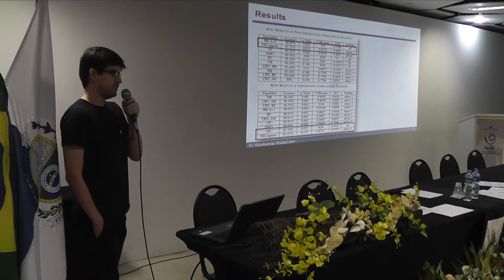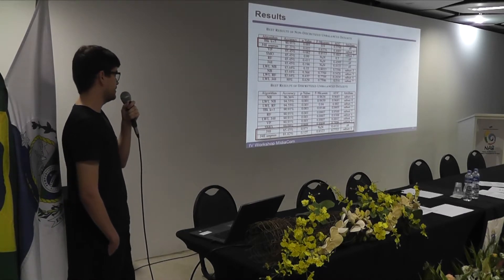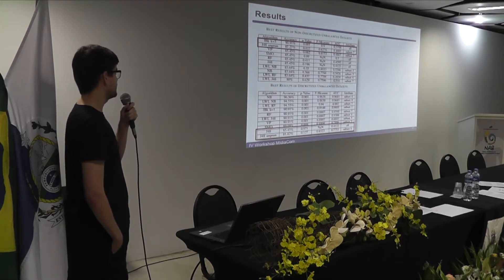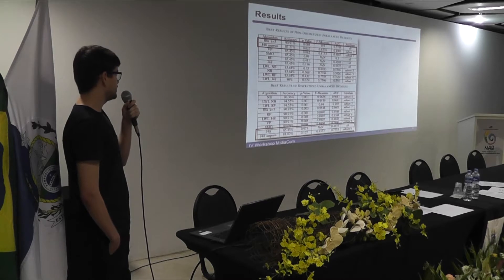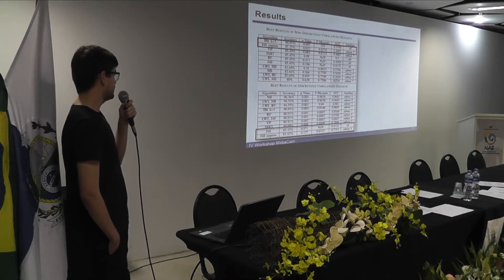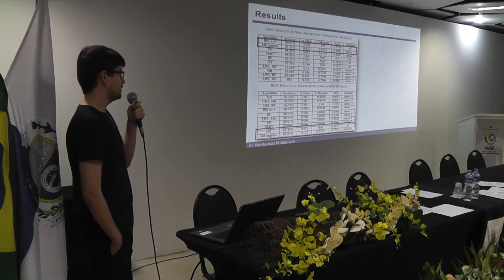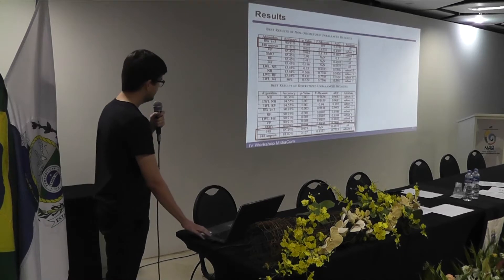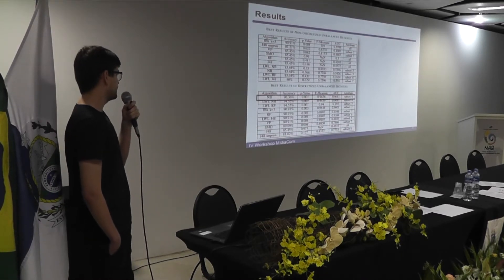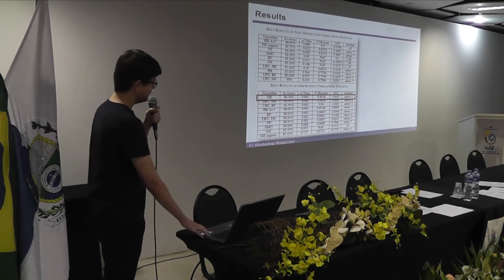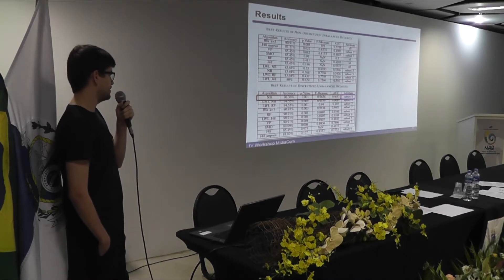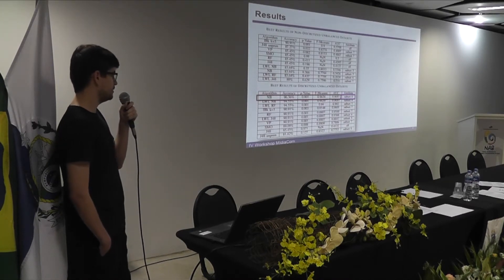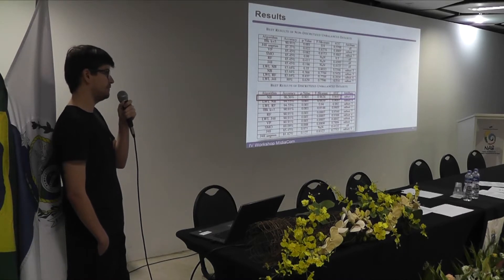These are the results before and after supervised discretization. The table at the top shows results before supervised discretization — only two of them got an accuracy higher than the baseline. On the other hand, after supervised discretization, only two of them got an accuracy lower than or equal to the baseline. Our best result was 96.36% accuracy, and attribute selection also collaborated to this result. The subset of 6 in this image means we used the subset with the first 6 attributes.